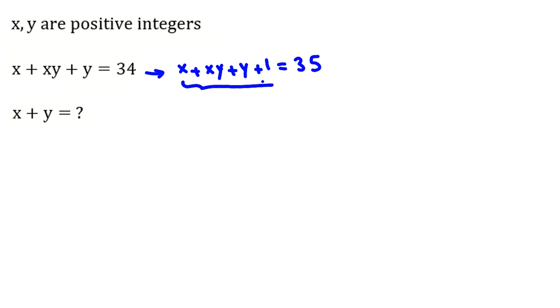The idea is this now: you can factorize this. You can say the left-hand side is x plus 1, y plus 1, because it will be xy here, x times 1 is x, y times 1 is y, and 1 times 1 is 1, equal to 35.